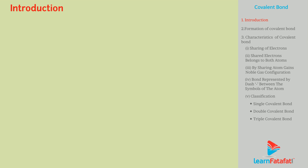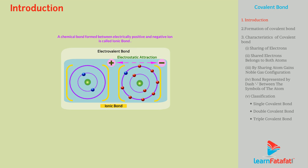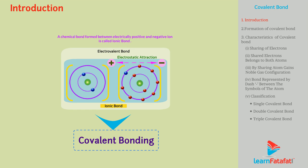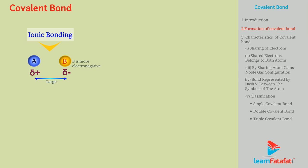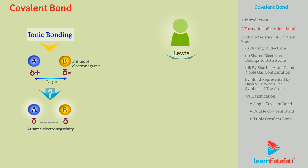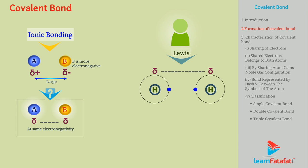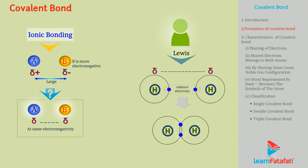Covalent bond. In previous video, we have learned about ionic bonding. Now we are going to learn about covalent bonding. Ionic bonding is possible if there is large difference in electronegativities of two combining atoms. But what if the two atoms have similar electronegativity? Lewis suggested that atoms having similar electronegativity can combine together by sharing of valence electrons. Such a bond formed by sharing of electrons is called a covalent bond.